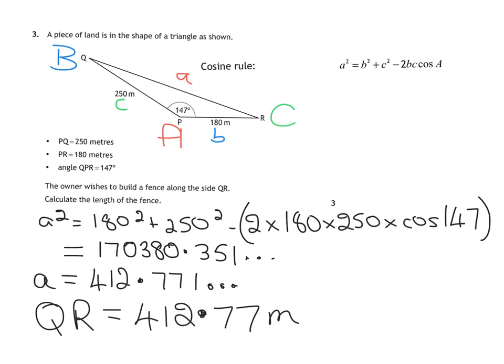Marking scheme. You get a mark for substituting correctly into your formula. You get another mark for correctly calculating the A squared or QR squared. And then you get your final mark for stating what QR is equal to. Three marks.